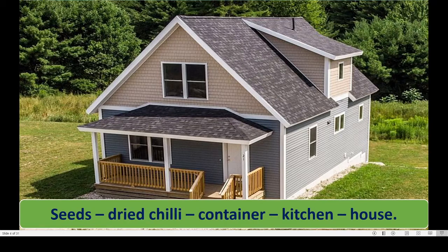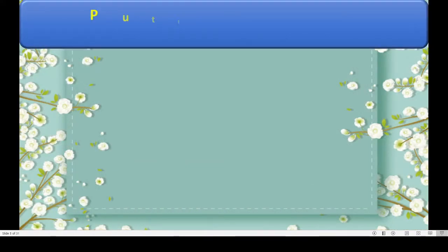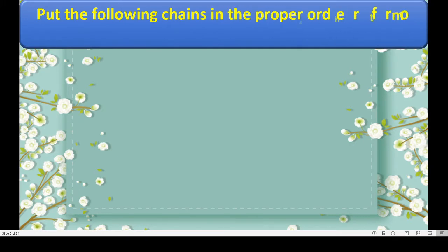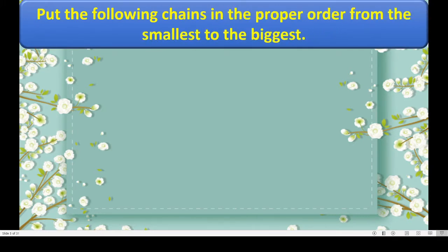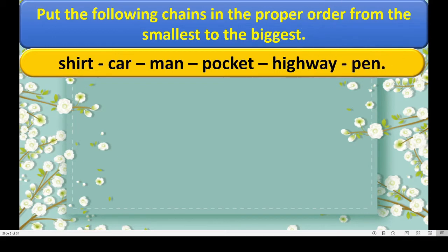One more example we will try. Again, put the following chains in the proper order from the smallest to the biggest. Why is it called chains? Because it is connected to one another — like a link, they are connected to each other. So it is called chains.